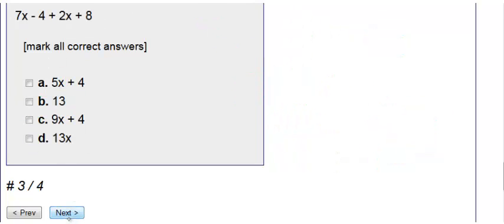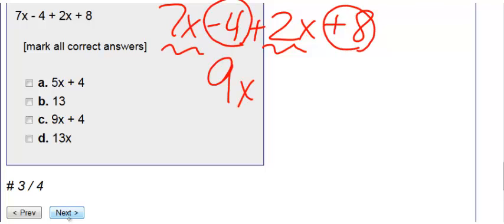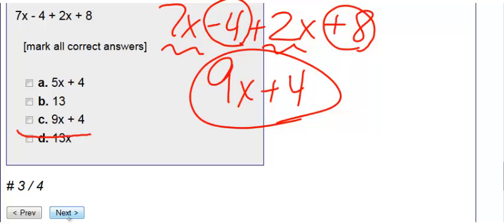Number three, we have 7X minus 4 plus 2X plus 8. So we combine our like terms. We have 7X here and a positive 2X. 7X and a positive 2X gives me 9X. Then we have a negative 4 and a positive 8. A negative 4 and a positive 8 gives me a positive 4 when I combine them together. I can't combine them anymore. Therefore, we get 9X plus 4 as our answer.